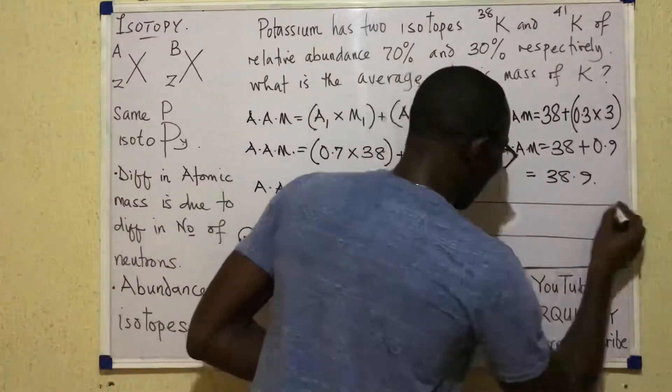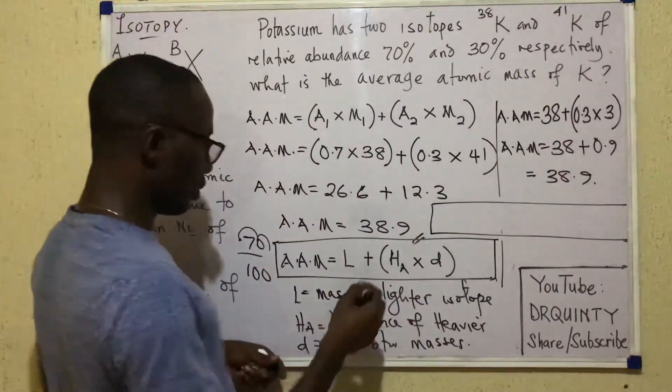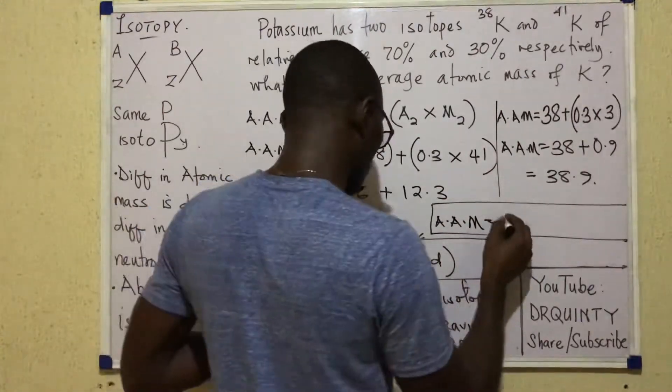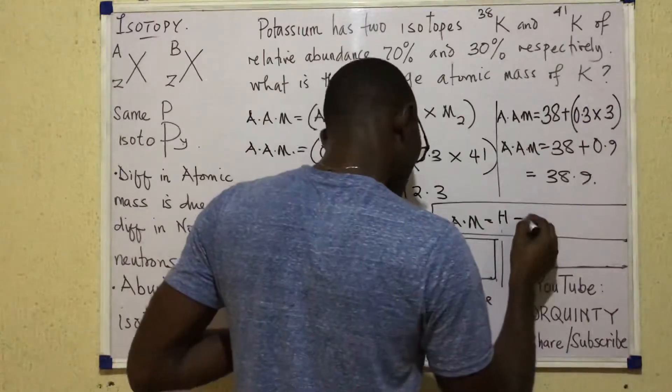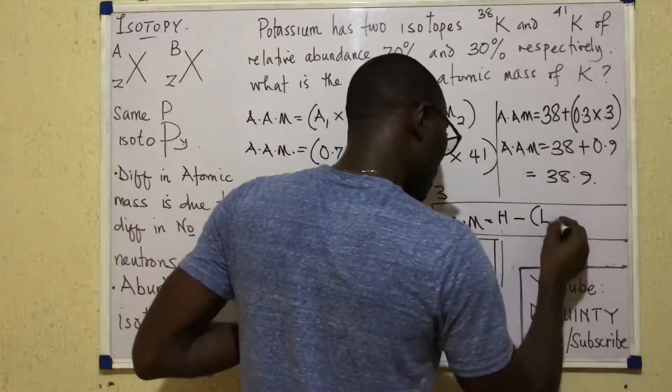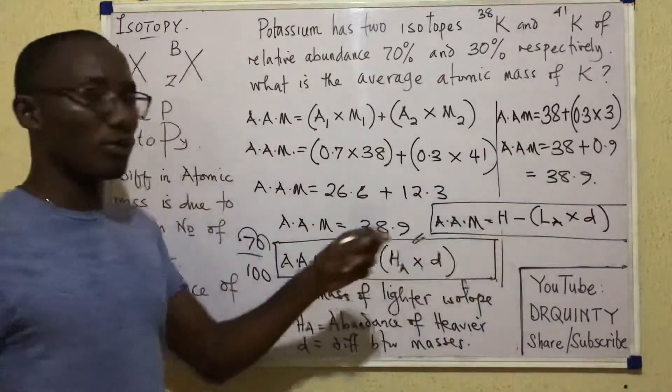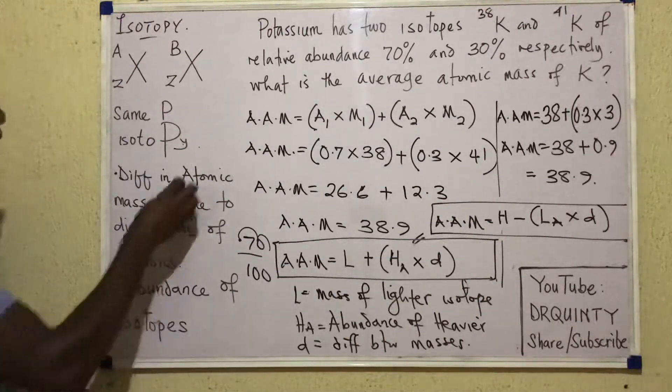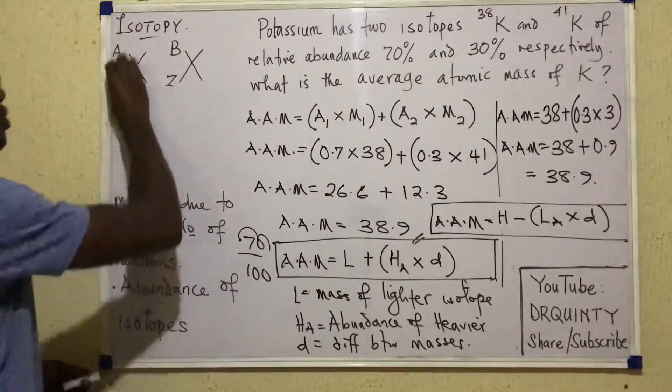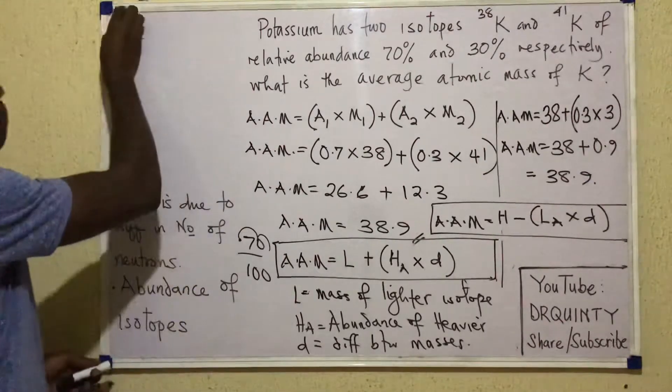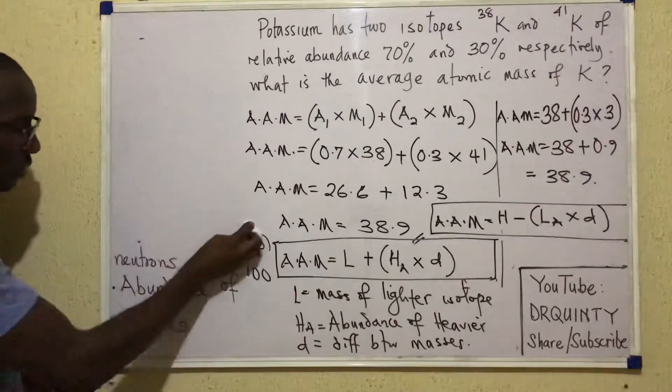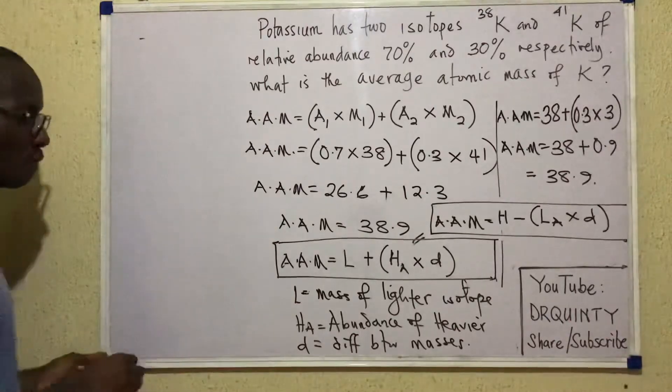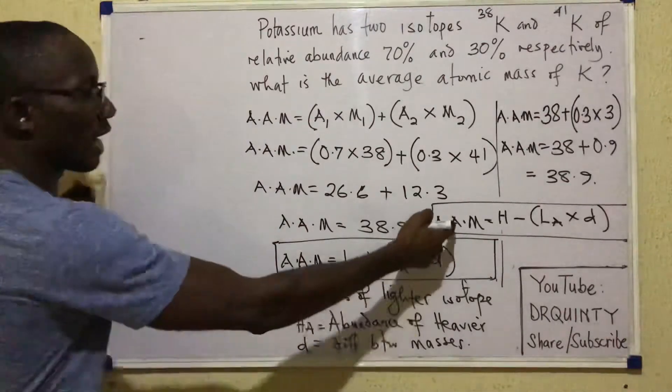So the second way I write this formula, because I took time to put that together, so I would claim ownership to a large extent. You can prove me wrong, please. Average atomic mass is equal to heavy minus light abundance times D. This will also work. In other words, the average atomic mass can be calculated as the mass of the heavy isotope minus the product of two things. And what are those two things? The abundance of the light isotope and the difference between the masses.